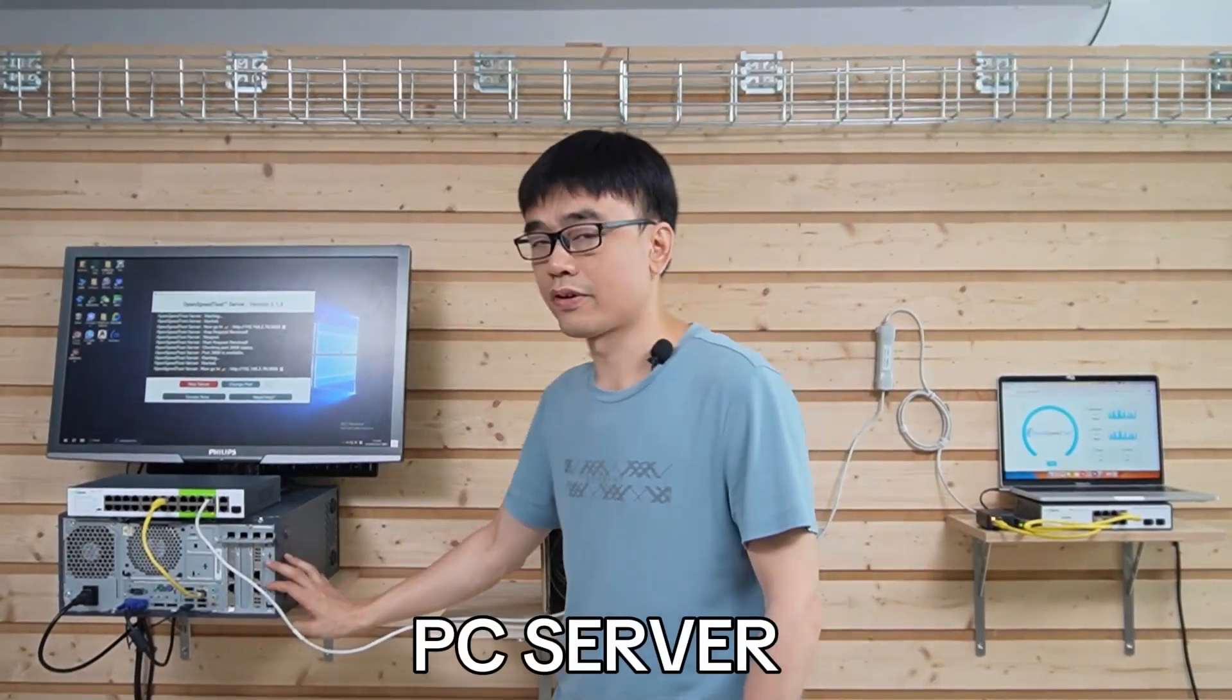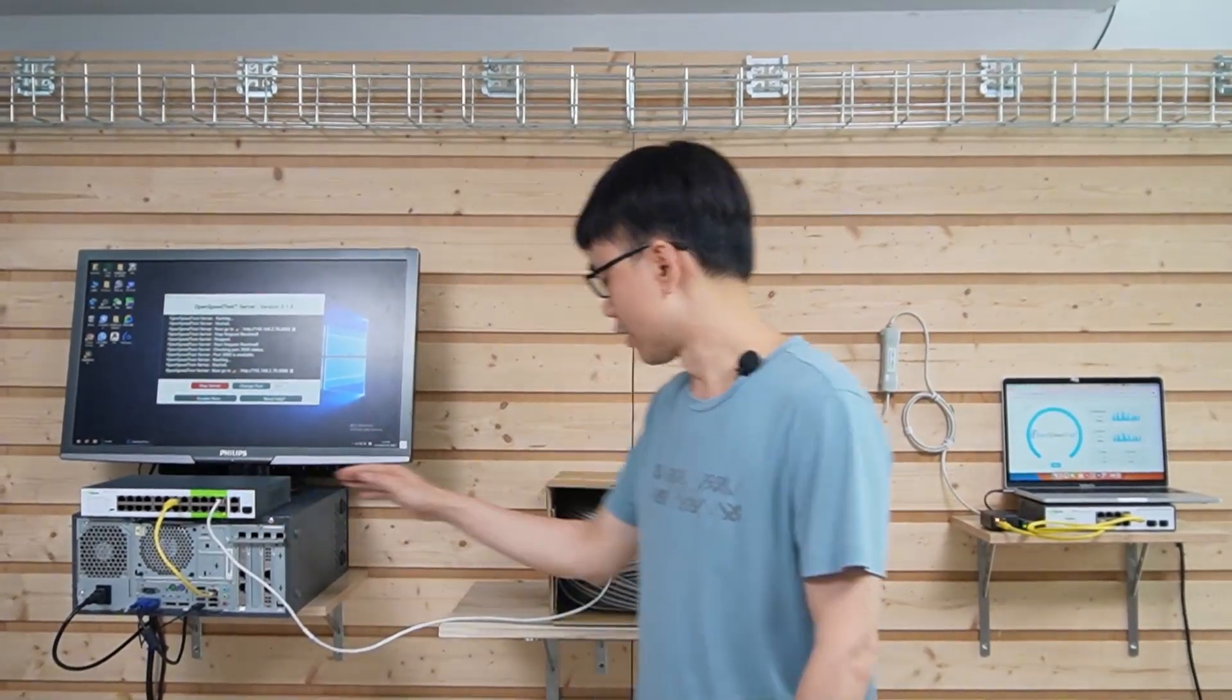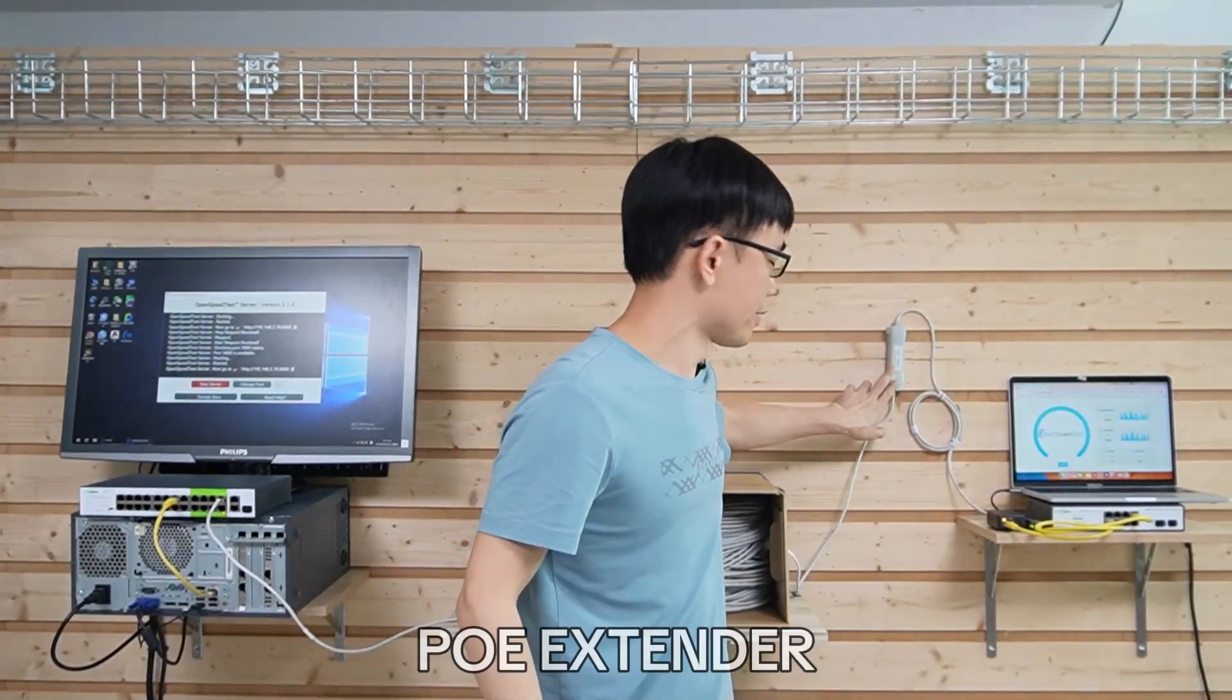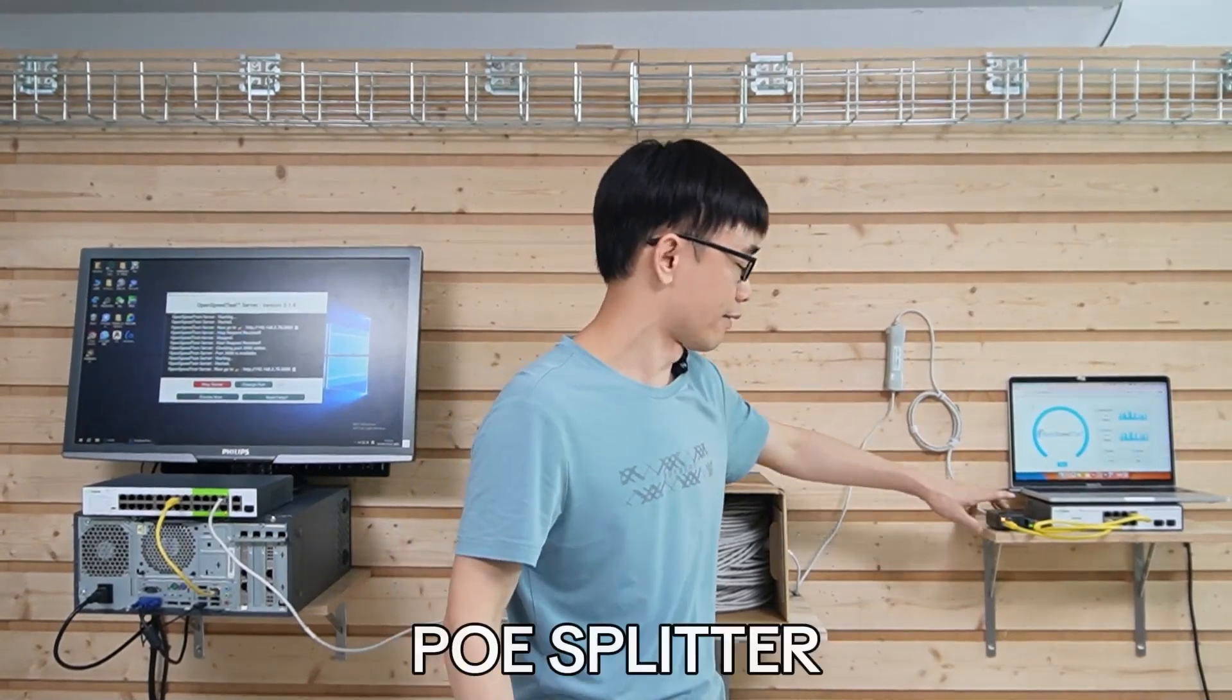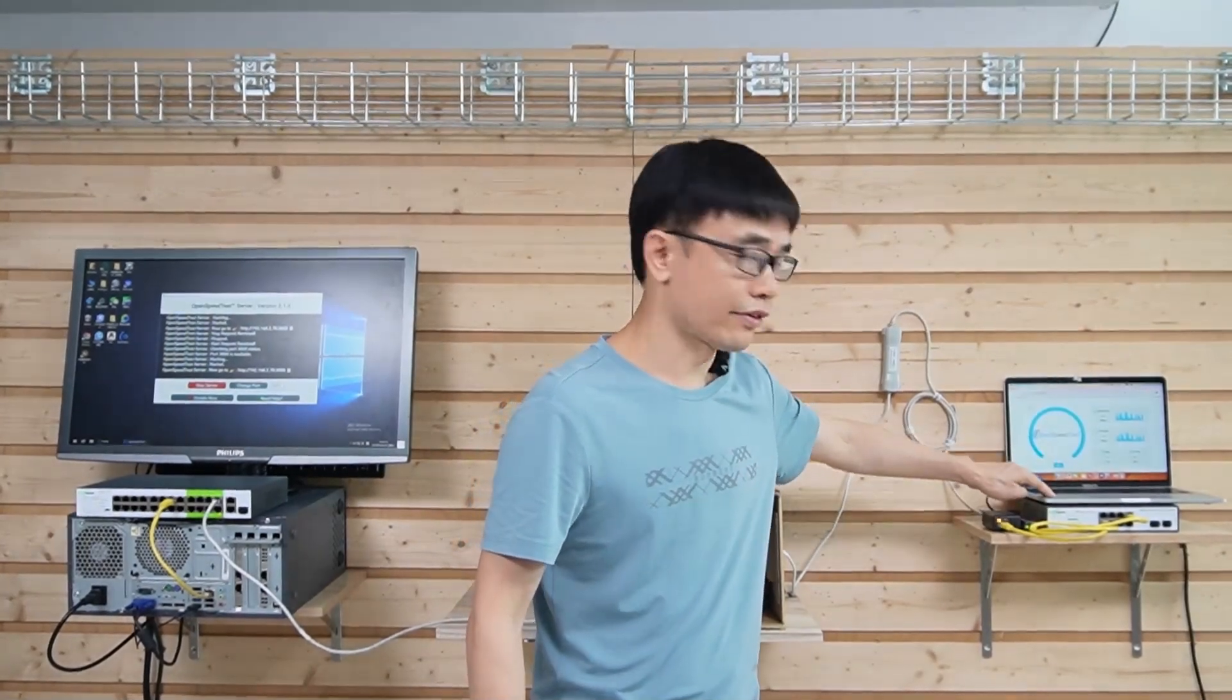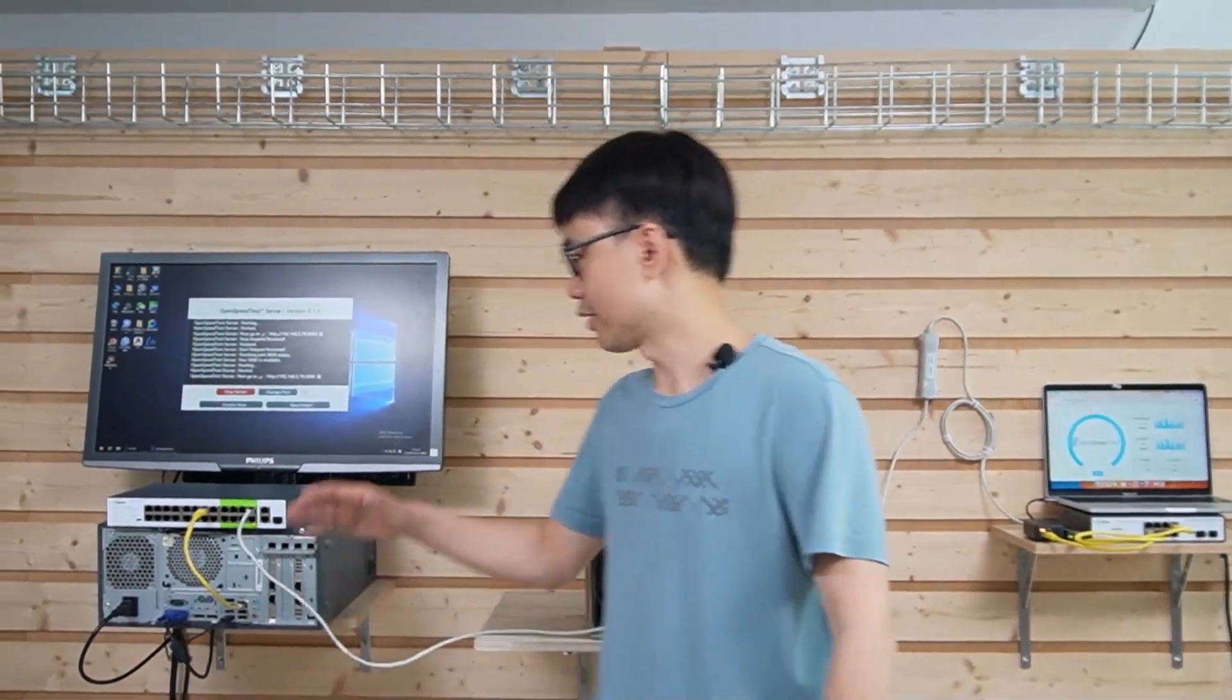I have added the PC server in the house and attached this PC server to our 24-port long-range POE switch. This is the 300-meter CAT6 Ethernet cable. We still have the POE extender in the barn and the POE splitter and the second POE switch. This is the new computer, it's attached to this POE switch.